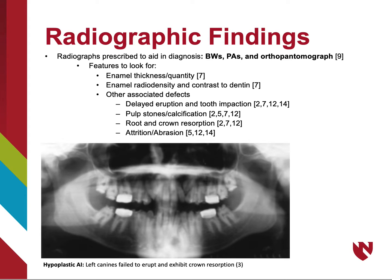Identification of AI is primarily made by clinical examination, though radiographic features substantiate the clinical impression and help differentiate subtypes. Bite wings are beneficial to preserve the contrast between enamel and dentin and measure the thickness of enamel. Pantomographs and periapical radiographs are prescribed to view the disturbed teeth, as well as other accompanying defects related to AI. These include delayed eruption and tooth impaction, pulp stones and pulp calcifications, root and crown resorption, attrition, and abrasion. The radiograph shown here is a case of hypoplastic AI, where the left canines failed to erupt and exhibit crown resorption.